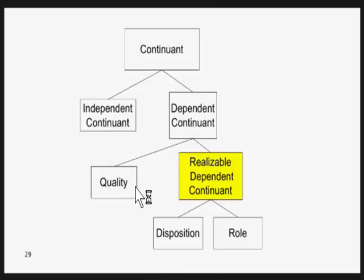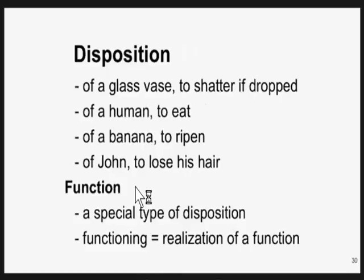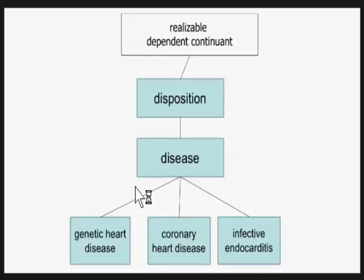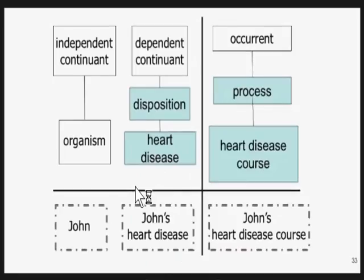In addition to qualities like temperature, BFO also includes dispositions and roles. Functions are a special type of disposition — the function of your heart is the disposition of your heart to pump blood. Dispositions are examples of realizable dependent continuants, meaning they have realizations which are processes. Diseases are examples of dispositions on the bad side, where functions are on the good side. Diseases, like temperature, have courses — heart disease has a heart disease course which is a process depending on the heart disease.